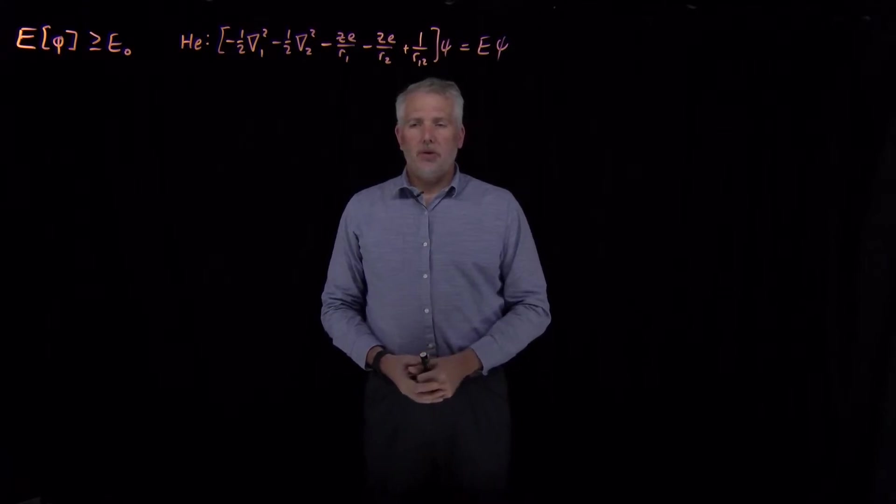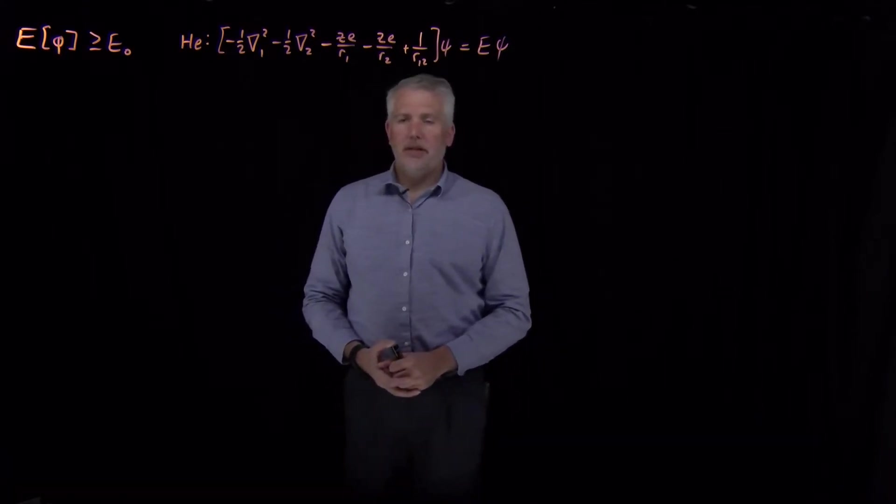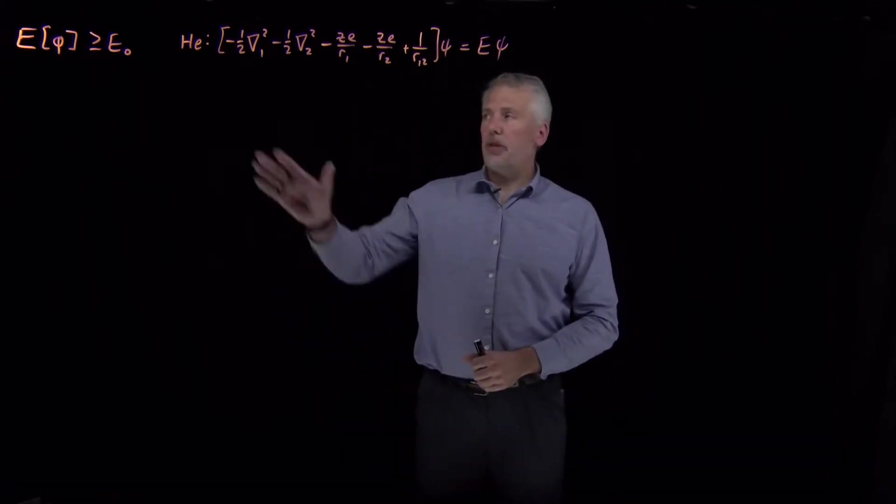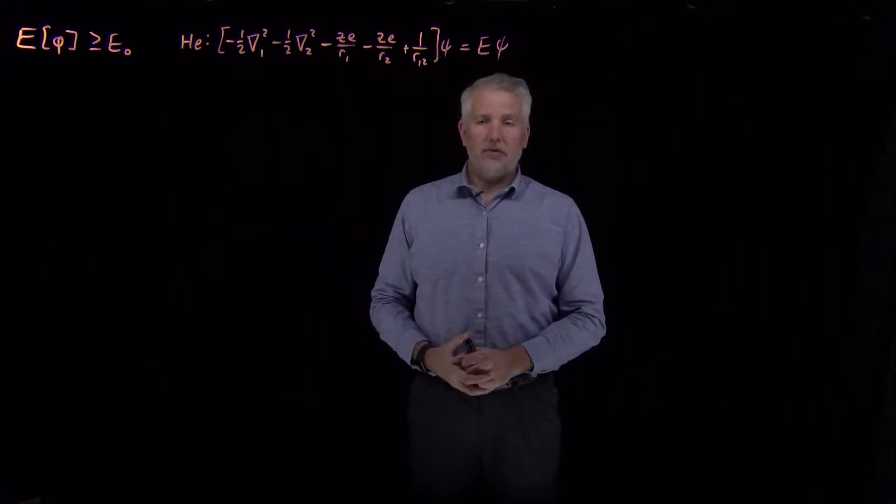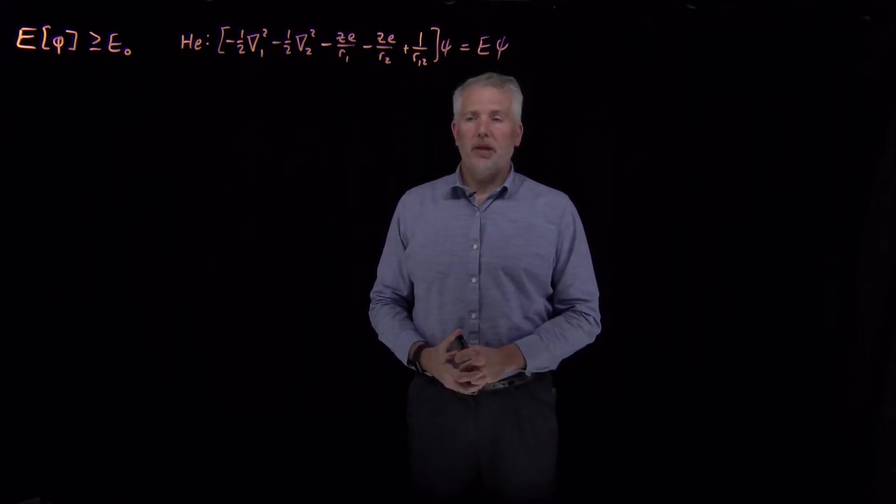So, the next step is to take what we know about the variational theorem and see what we can do with it to understand some problems where we can't truly solve the Schrödinger equation, but we can come pretty close.